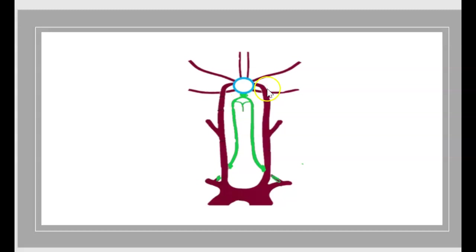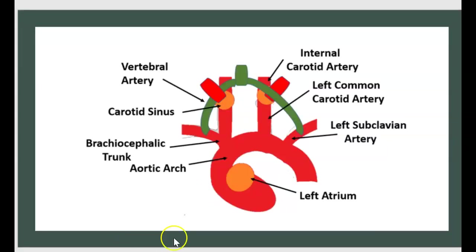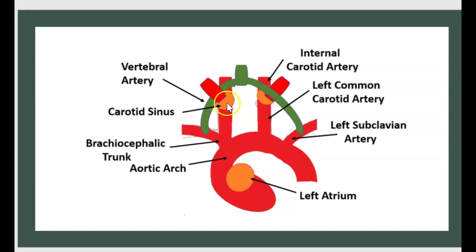Both are anastomized with the circle of Willis, shown in blue. Here is the aortic arch with the brachiocephalic trunk and common carotid artery with carotid sinus. At the level of the carotid sinus, there is an internal carotid artery and external carotid artery — this is about the anterior system, shown in red.